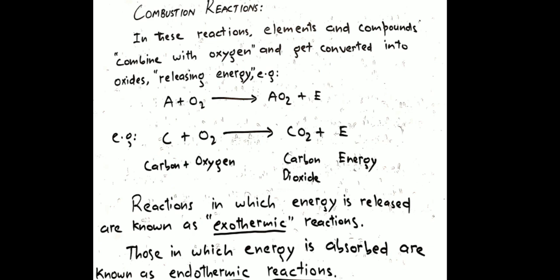Coming back to reactions in general: reactions in which energy is released are called exothermic reactions, and those in which energy is absorbed are called endothermic reactions. Net energy means that sometimes energy is required to start a reaction, but when reactants are converted to products, energy comes out. If the net energy output is positive, the reaction is exothermic; if net energy is negative, it is endothermic.